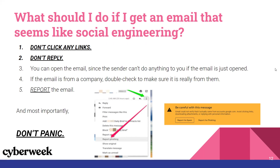Also double-check with the company to make sure that the email is legitimate. Sometimes companies do send incorrect emails, so it's always good to give them a call and just check. And most importantly, don't panic. This happens to hundreds of people, and when you panic, you may end up making the incorrect decision. So if you get an email that looks like a scam, keep calm and try to figure your way out of the situation.